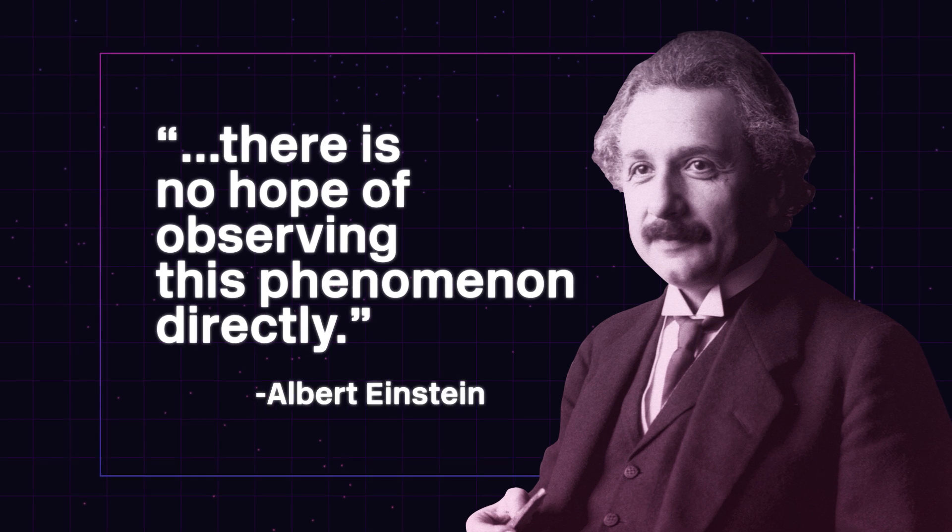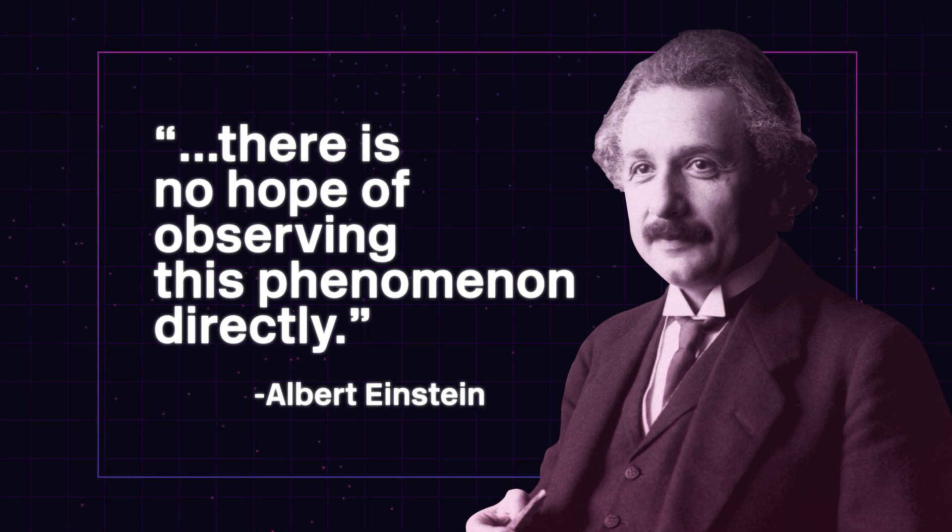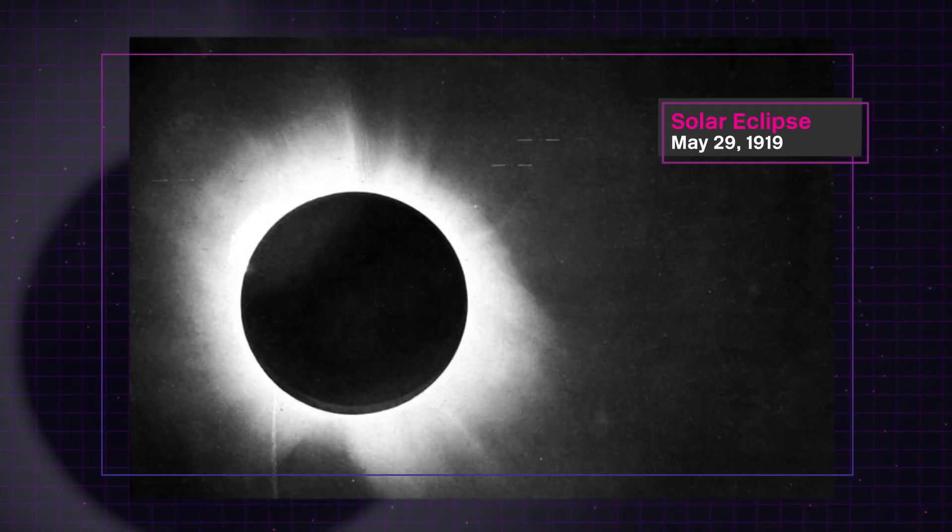These events can only happen when stars very far apart line up just right. So that's why Einstein once wrote that there is no hope of observing this phenomenon directly. In fact, up until now, we've only ever seen this type of movement before with our own sun during an eclipse in 1919.